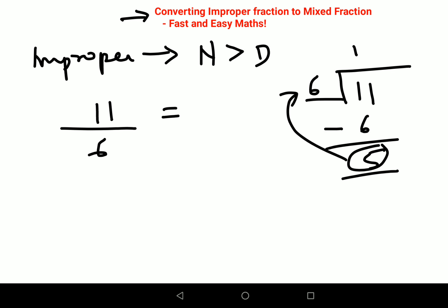Whatever is your remainder will come as your numerator. Your divisor gets carried forward, that becomes 6, and now your quotient becomes your integer. That's it, nothing else is needed when you convert an improper fraction to a mixed form.